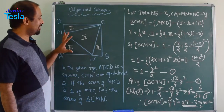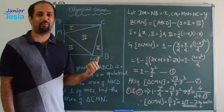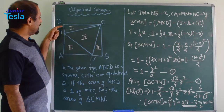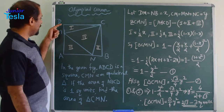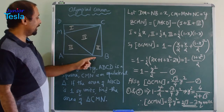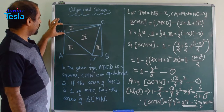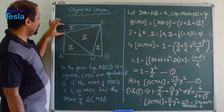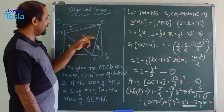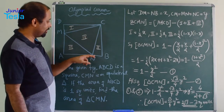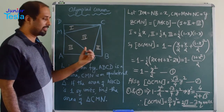Since the diagram is already given, we need not draw it. The only thing is we should know that DM and BN are equal. We will call this length X, so we take DM and BN as X.